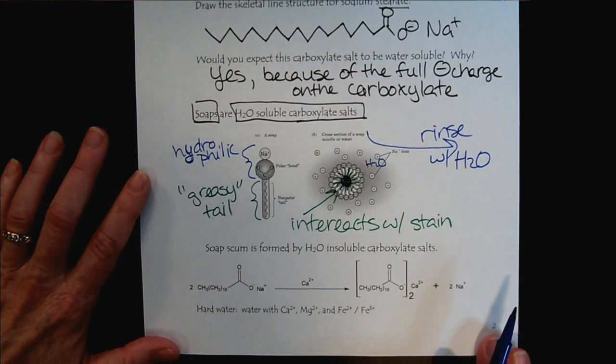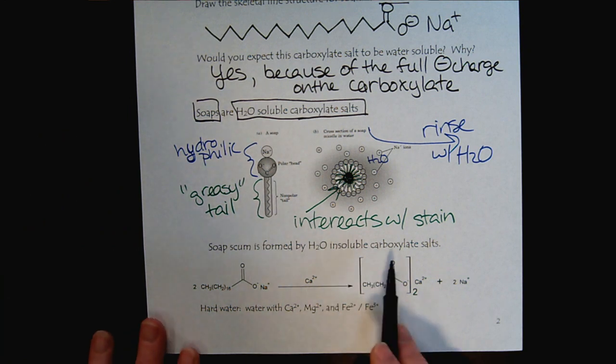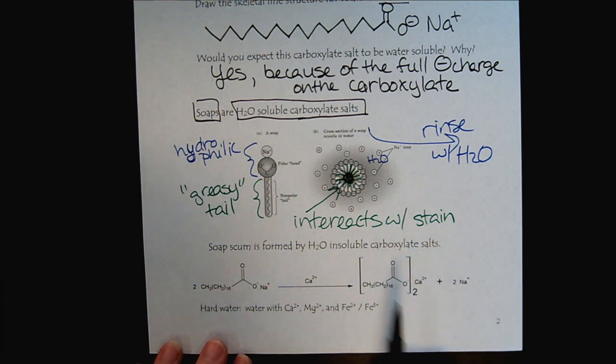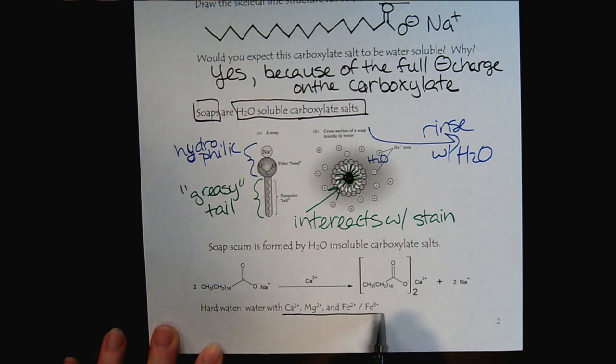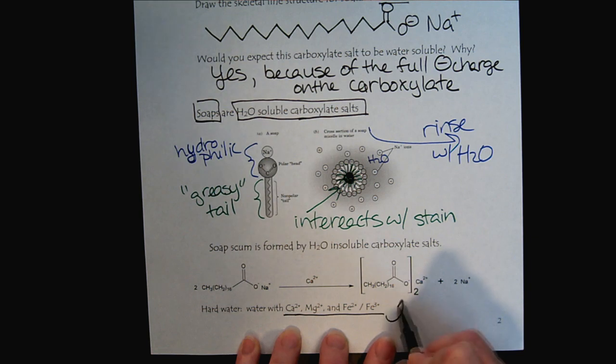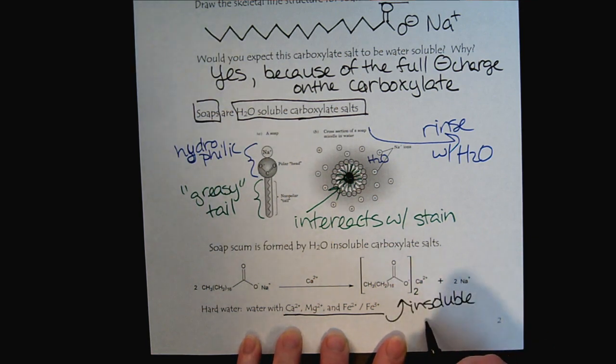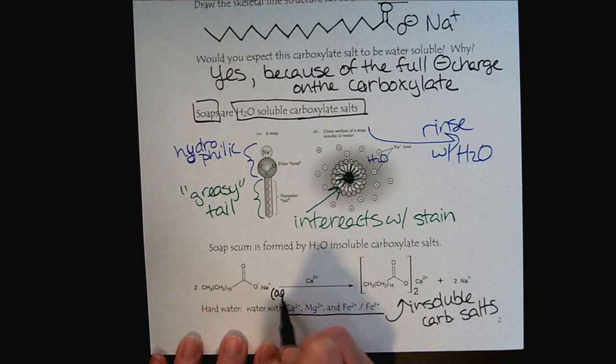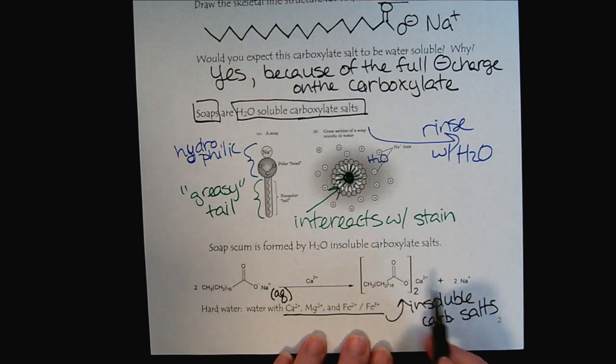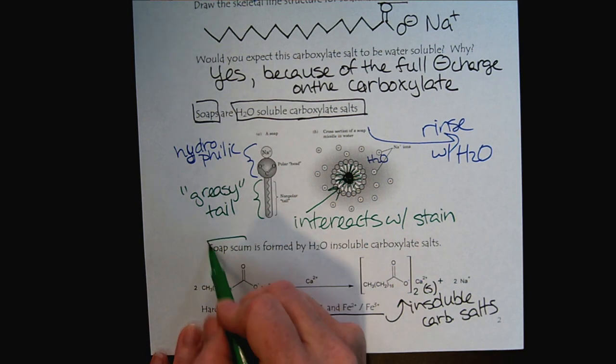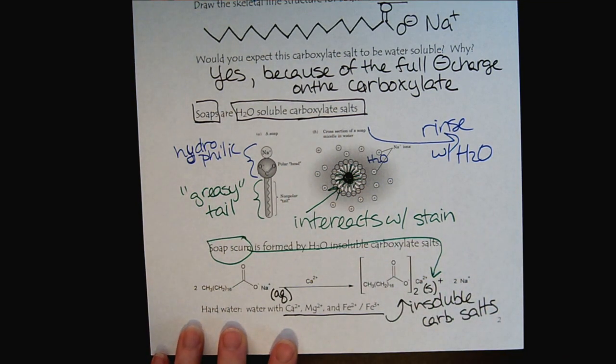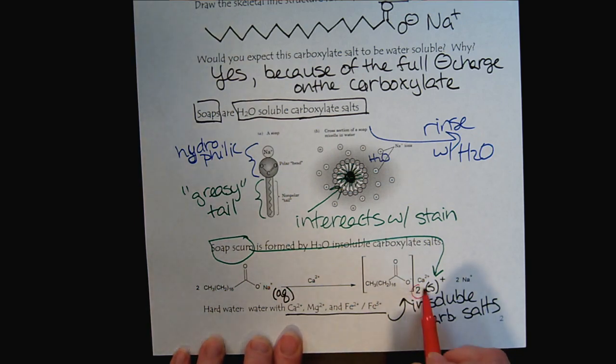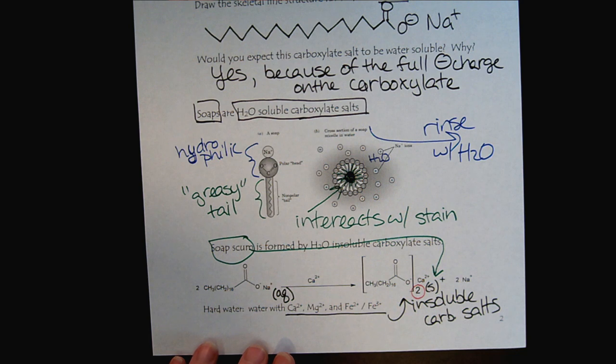And then if you're wondering about soap scum, remember that with carboxylate salts, they're soluble with sodium or potassium ions. But in hard water, ions like calcium, magnesium, or iron, they form insoluble carboxylate salts. And so if we were to write the phases, the sodium salt would be aqueous. It would dissolve in water, but the calcium salt would be a solid, and that solid is what we view as soap scum. If you're wondering about the ratio here, of course if we have a minus one charge and a plus two cation, we will need two of our anions to create the neutral soap scum.